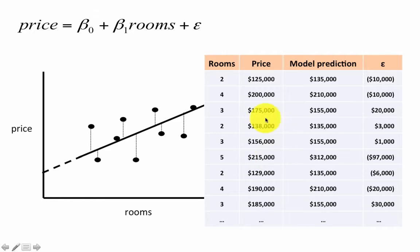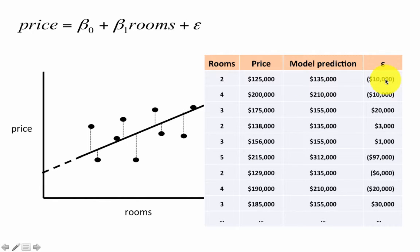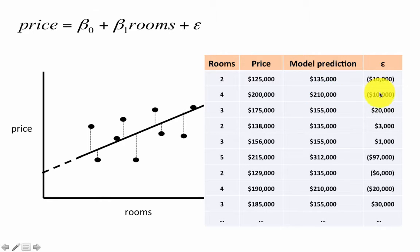Expanding to our specific example: the first household has actual price 125,000, the model predicted 135,000, so the error is minus 10,000. The second house has actual price 200,000, model predicted 210,000, error is minus 10,000. For the third house, actual price is 175,000, model predicted 155,000, so the error or residual is positive 20,000, and so on.